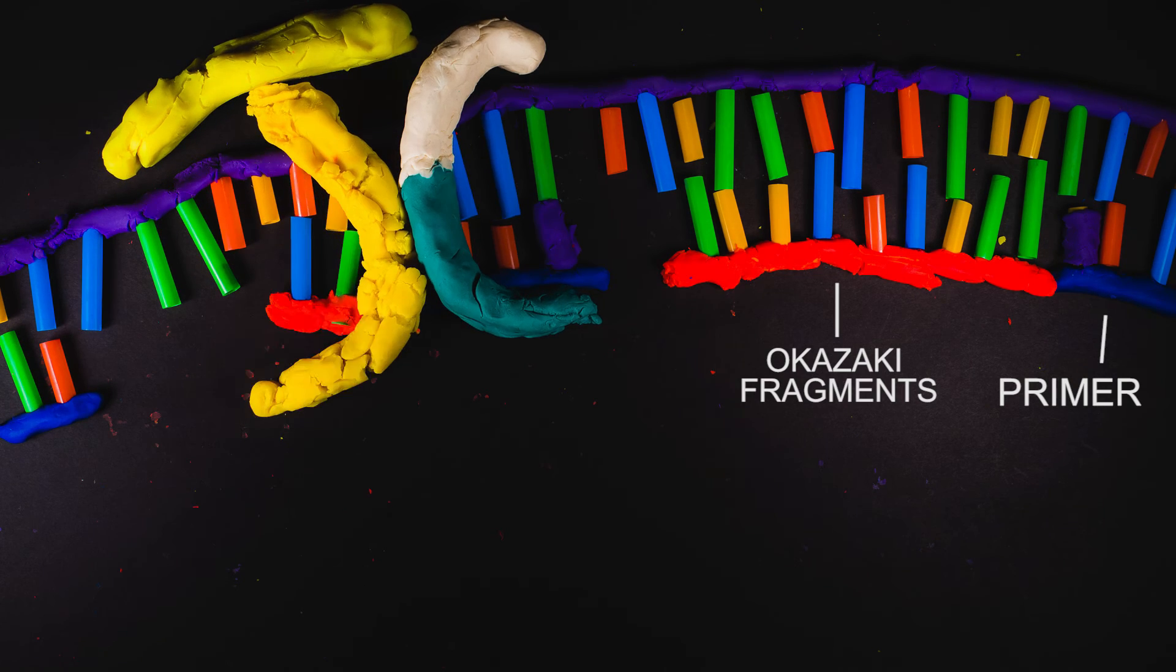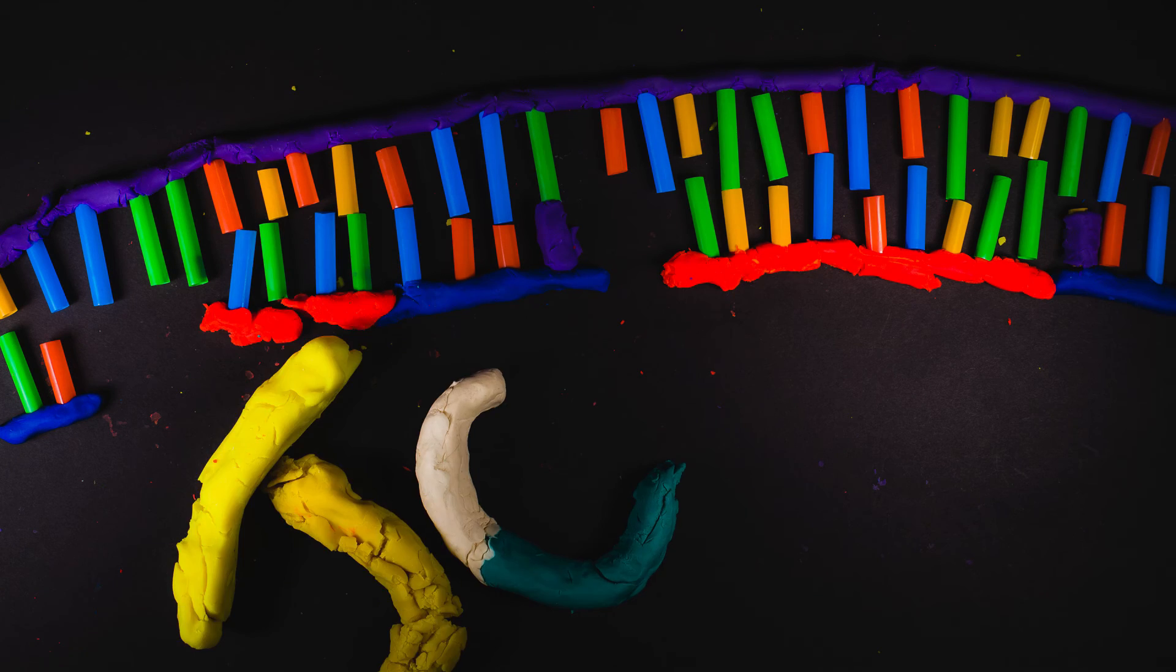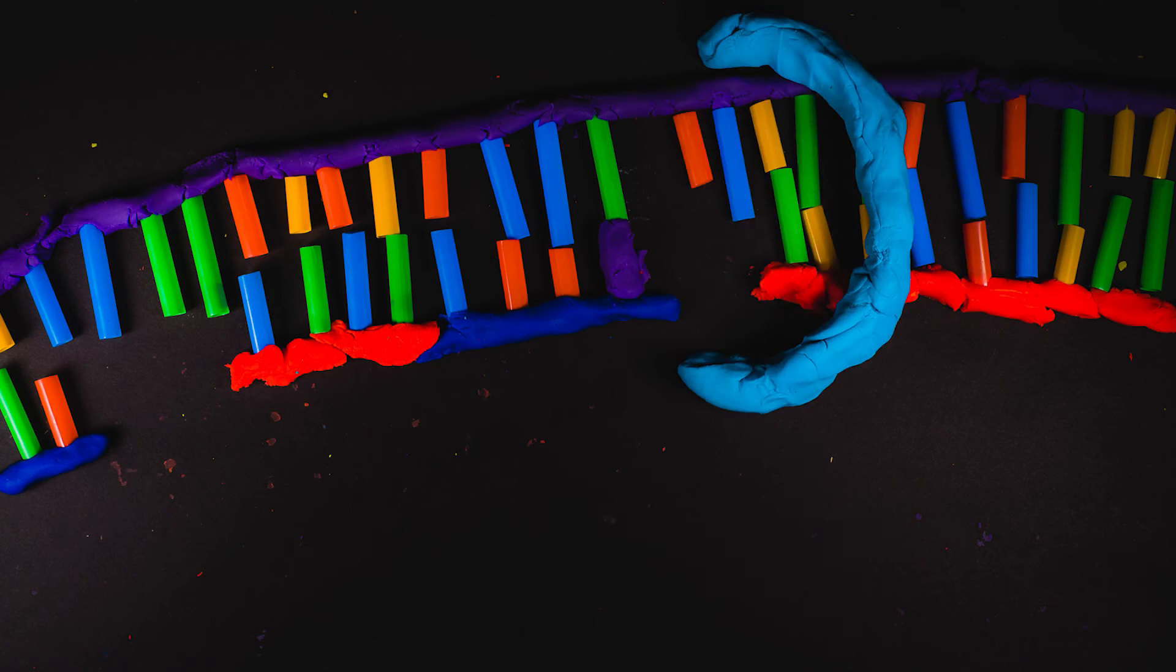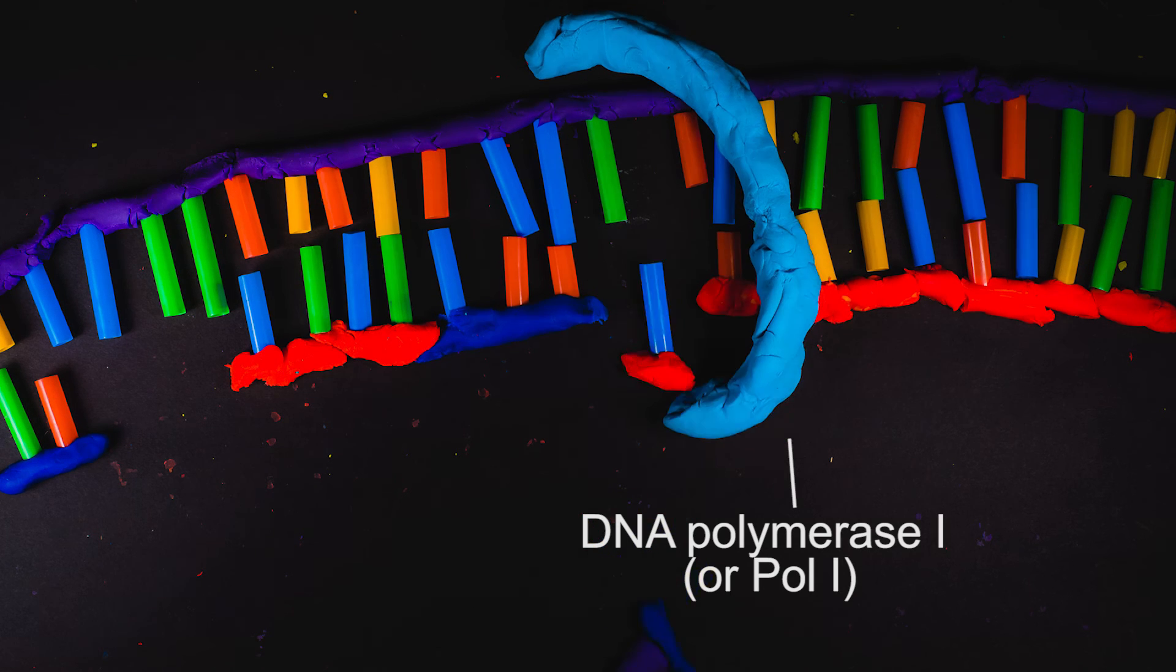Once DNA polymerase 3 has made these fragments, DNA polymerase 1, or POL1, comes back into the area. POL1 has a 5 to 3' exonuclease that degrades the RNA primer while synthesizing new DNA in its place.